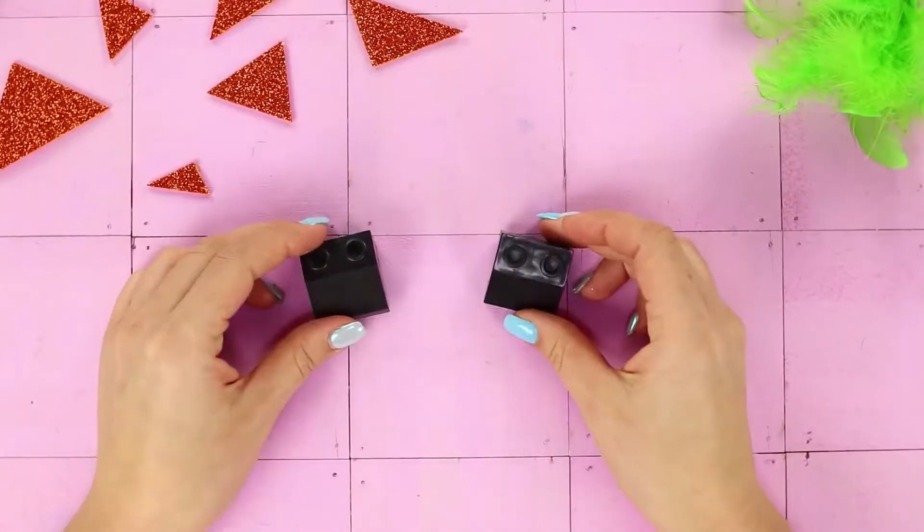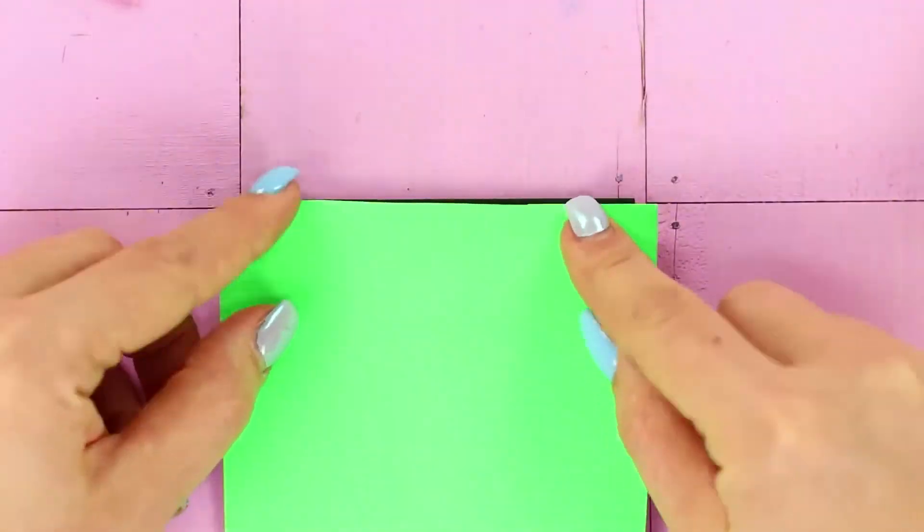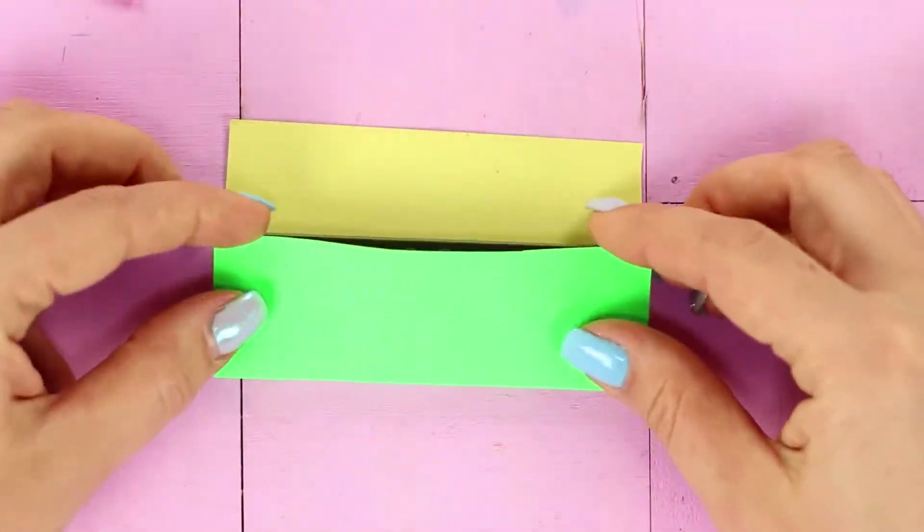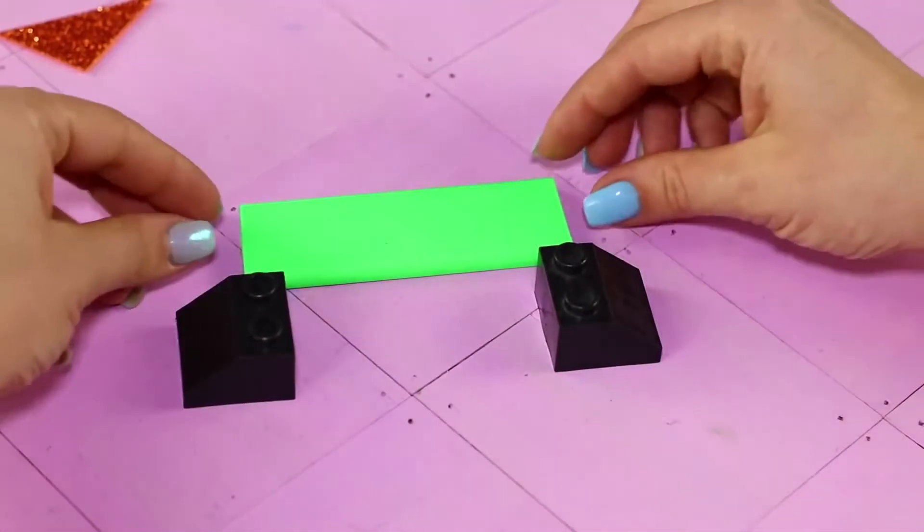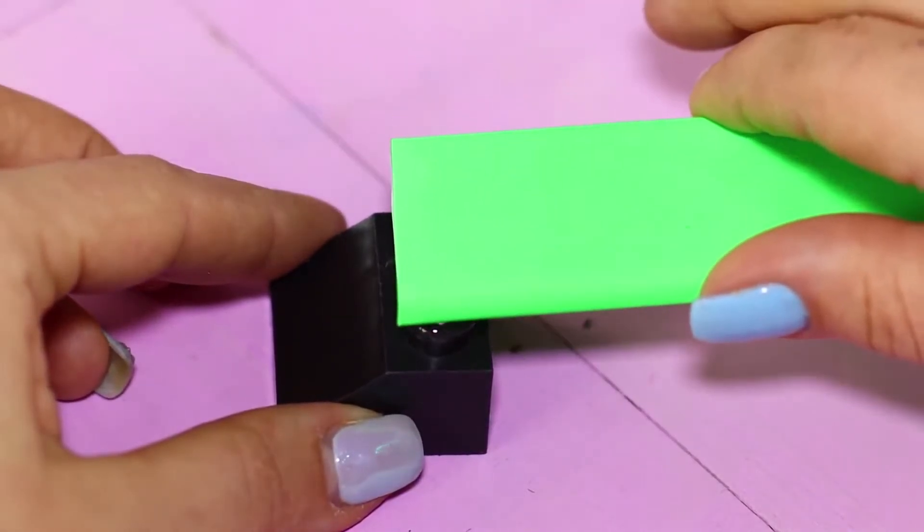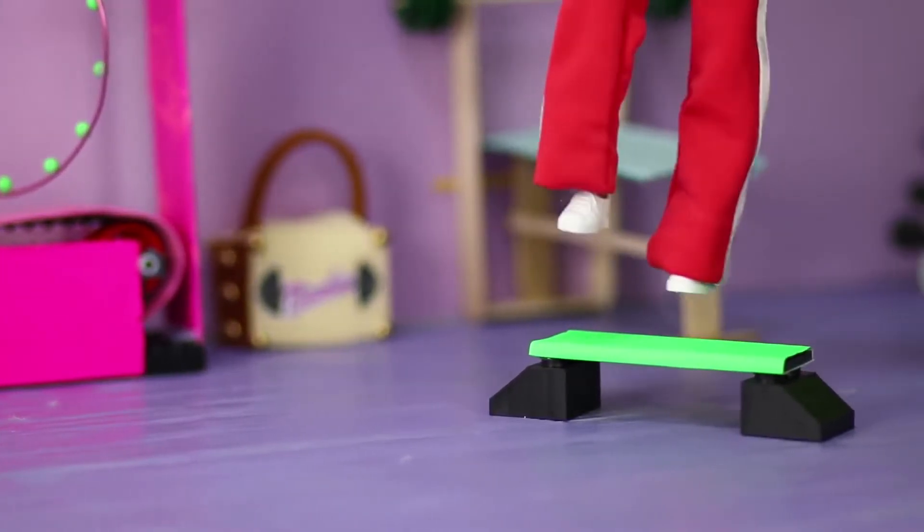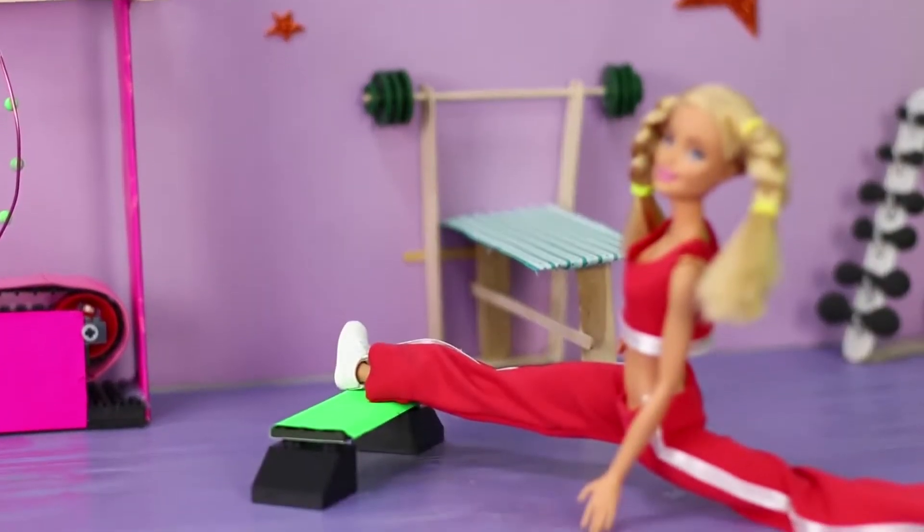For the next life hack, you will need Legos. Cover a flat piece with a foam rubber sheet. Next, take two pieces like this. Hot glue the crossbar between them. The result is a comfortable step for step aerobics. The workout will definitely be exciting!